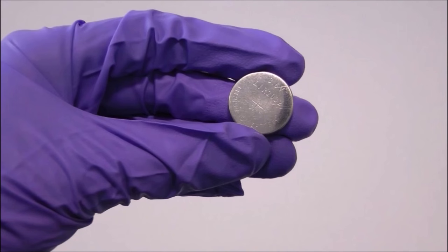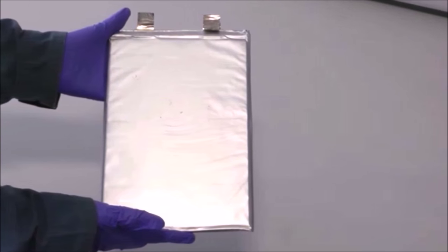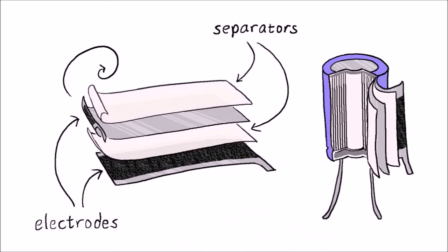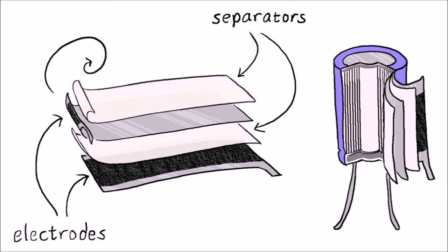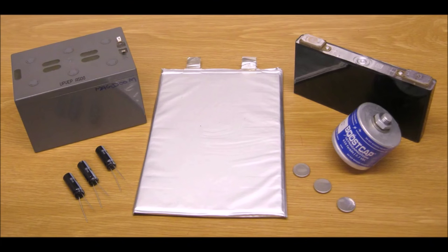When we've optimised the materials in our coin cells, we could scale up to make pouch cells, or even larger sheets of electrodes and separators which can be rolled up into a can shape, or folded or stacked in many layers.